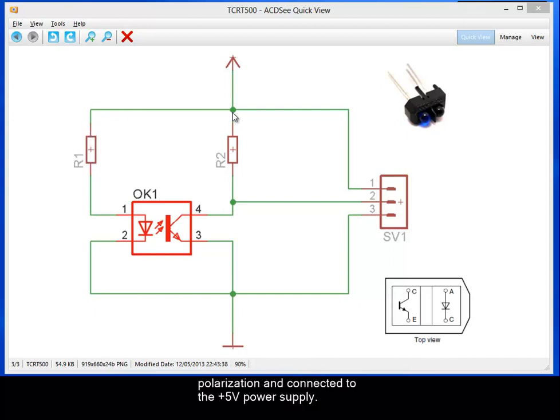The infrared receiver is a phototransistor. The emitter is connected to the ground GND.